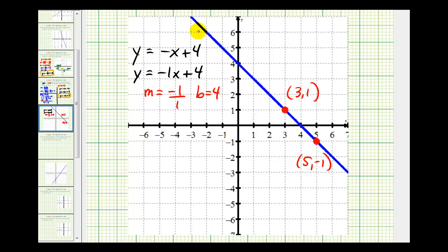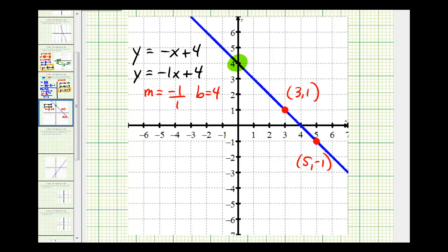Well, this blue line passing through the given two points does have a y-intercept of positive four. And, notice that if we select any point on this line with integer coordinates, let's say this point here. If we move down one unit and right one unit, we do end up back on the blue line. And, notice that we had a vertical change of negative one and a horizontal change of positive one, which does verify this slope would be negative one over one or just negative one. So, this does verify that our equation is correct.